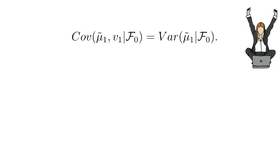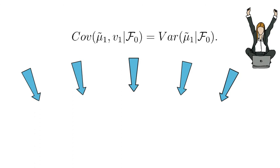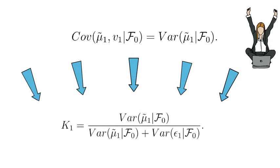Putting everything together, we have shown that for the return model where realized risk premiums equal the ex-ante expected risk premium plus Gaussian noise, and the ex-ante expected risk premium follows a random walk with Gaussian noise, the optimal resulting learning rate in time 1 just equals that ratio.